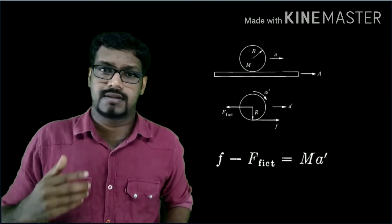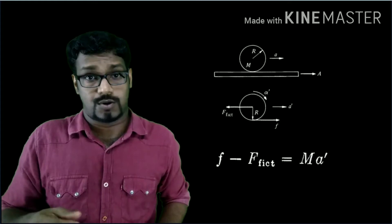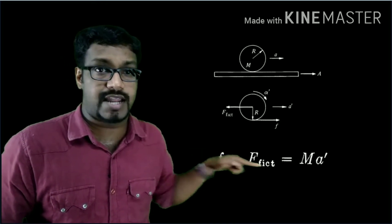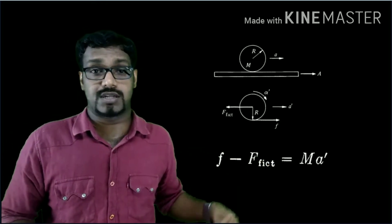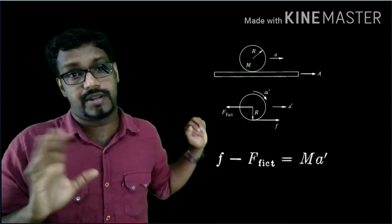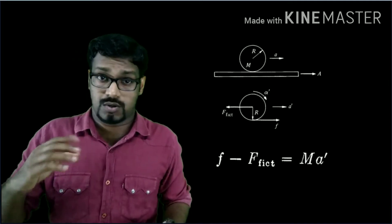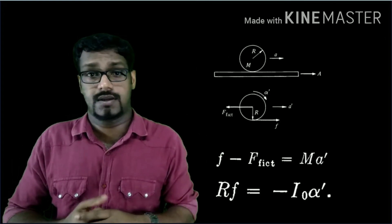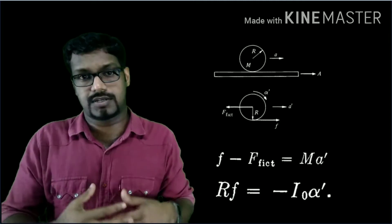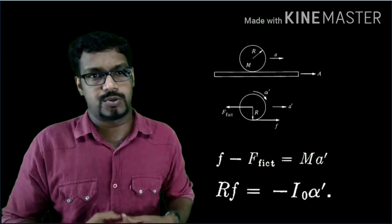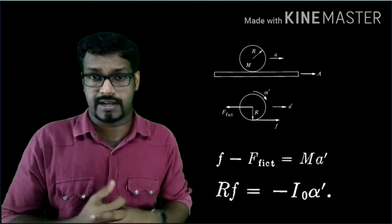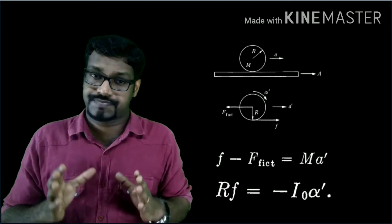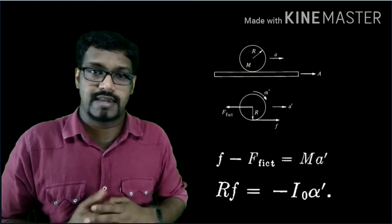Along with translational motion, the cylinder has rotational motion. The frictional force is what causes this rotation — if there is no friction, the cylinder will just slide with no rotation. So the frictional force is rotating it. The torque equals the radius of the cylinder times the frictional force. Since R and F are perpendicular, R cross F equals RF. So R times small f is the torque acting on the cylinder, which should equal I times alpha prime. Therefore RF equals minus I times alpha prime.